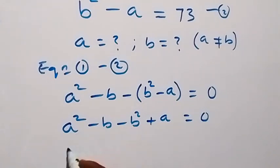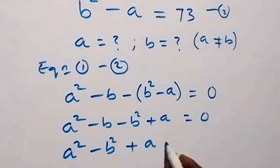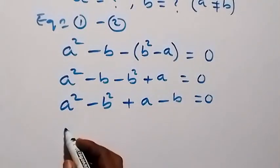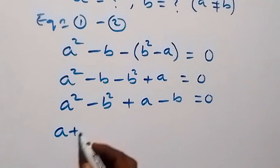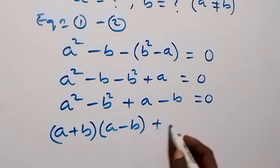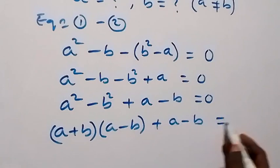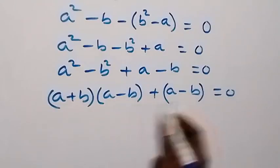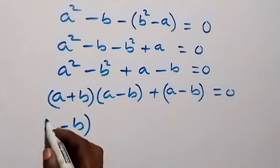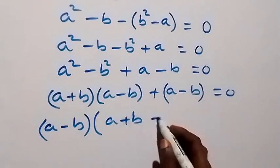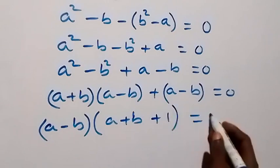Then we have a squared minus b squared, brought together, plus a then minus b, which equals 0. This gives us a squared minus b squared in the form of a plus b, then into bracket a minus b, plus bracket a minus b, equals 0. We can put this in brackets, and when we factor a minus b out, this becomes a minus b, into bracket a plus b, then plus 1, equals 0.